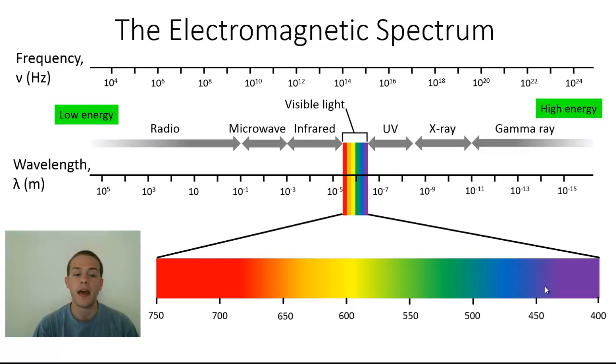On the left side, where we have low frequency, high wavelength radiation, that type of radiation has very low energy. Conversely, on the right side, the high frequency, low wavelength radiation has very high energy. That energy to frequency to wavelength relationship is going to be very important. We're definitely going to revisit that later in this playlist.